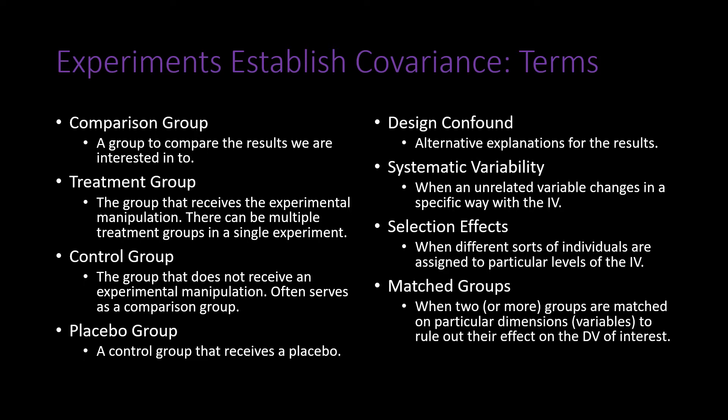Matched groups are used when it is important to make sure two different groups are as similar as possible. Groups are measured on whatever variables you hope to control, and then assignments are made based on those measurements. For example, if height was important, you would measure everyone's height, take the two tallest people and randomly assign them to two groups, take the next two tallest and split them up, and continue until the two shortest people are also split. This ensures both groups have roughly the same proportion of tall and short people.